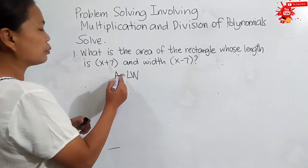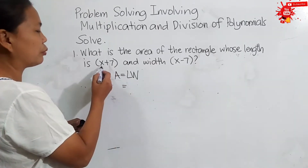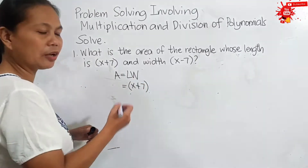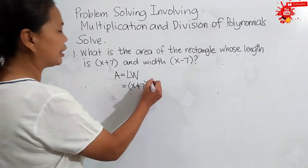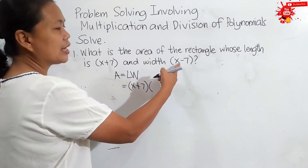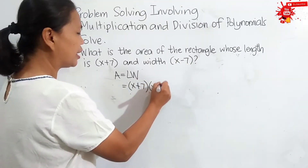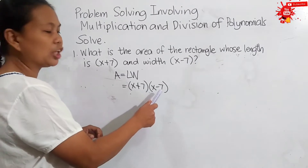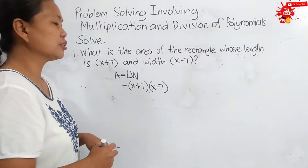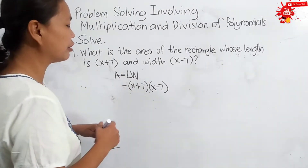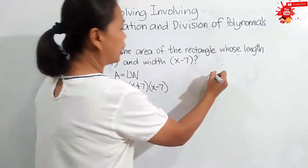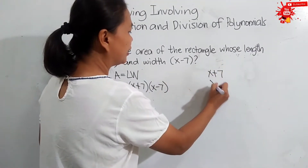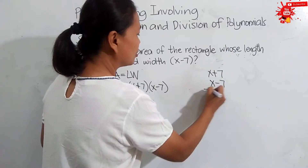By substituting, we have the length which is equal to x plus 7, the quantity of x plus 7, times the width which is x minus 7. So, we have here multiplication of a binomial by another binomial. We can use the vertical method here. So, we have the solution: x plus 7 times x minus 7.